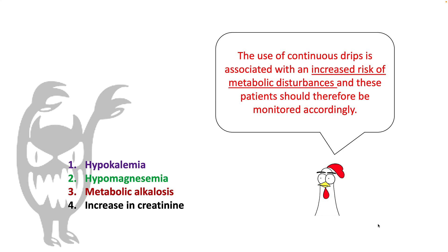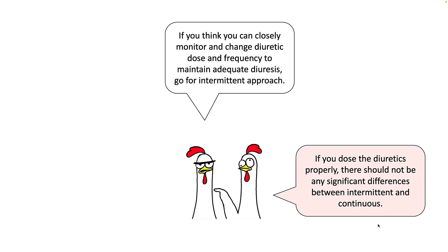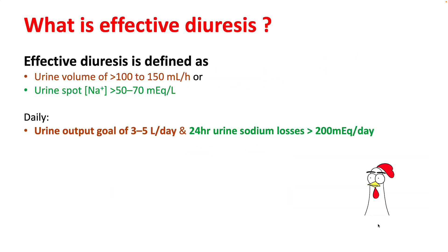Continuous drips are also associated with increased risk of metabolic disturbances like hypokalemia, hypomagnesemia, metabolic alkalosis, and increases in creatinine, so these patients should be monitored very carefully. Effective diuresis is defined as urine volume more than 100–150 mL per hour and urine spot sodium more than 50–70 mEq/L.